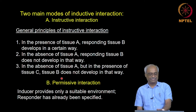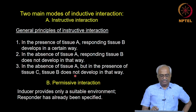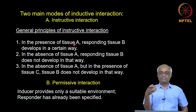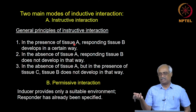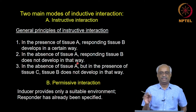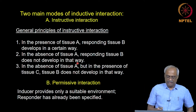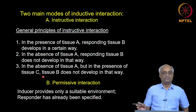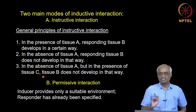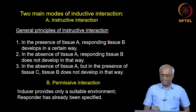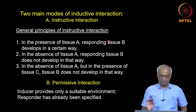As a summary of instructive interaction: in the presence of tissue A, responding tissue B develops in a certain way — when the optic vesicle underlies the anterior ectoderm, it forms a lens placode. In the absence of tissue A, responding tissue B does not develop that way. And in the absence of A but presence of a different tissue C, B does not develop that way — it needs that specific inducing signal. These are the general principles of instructive interaction.